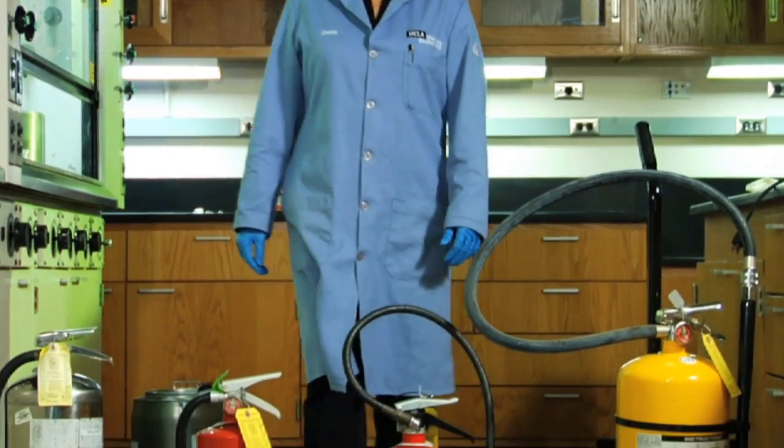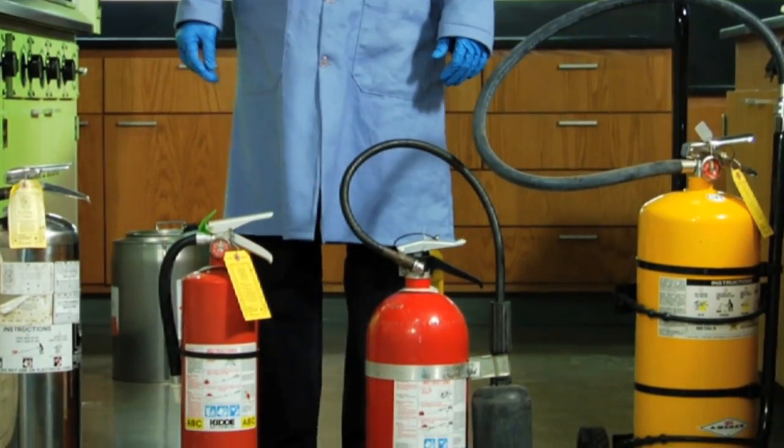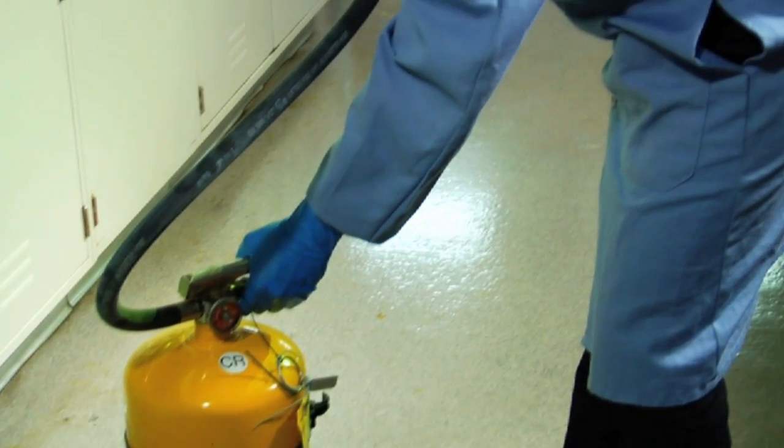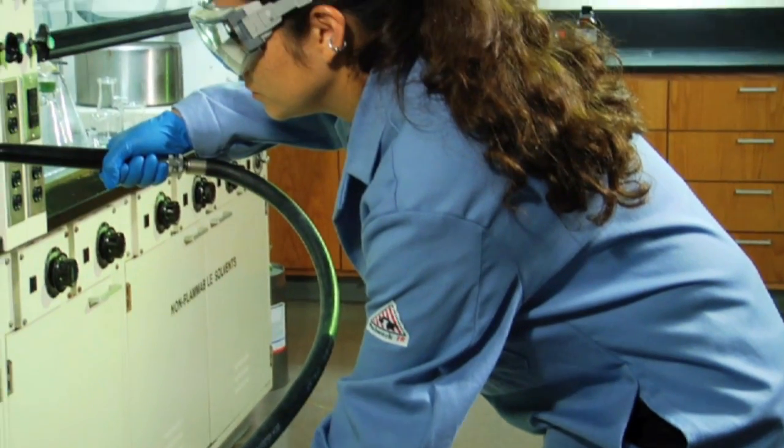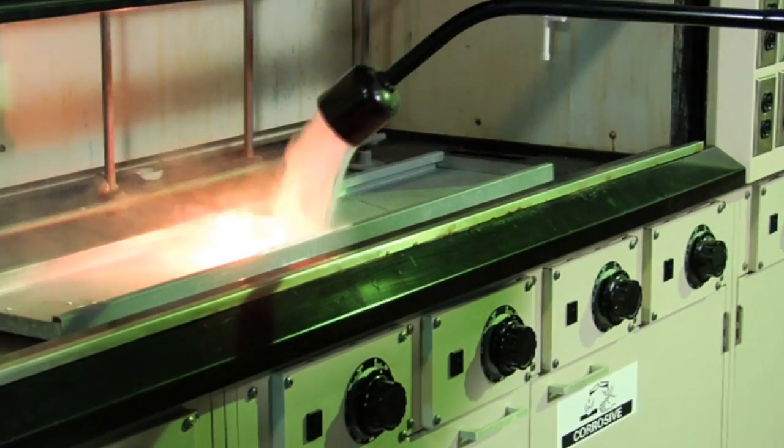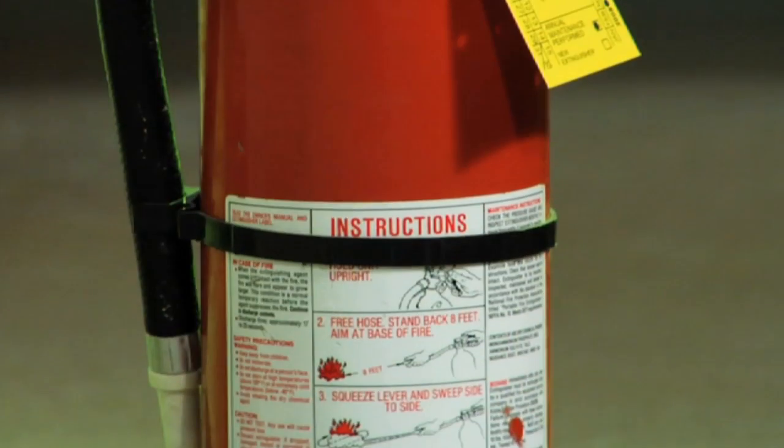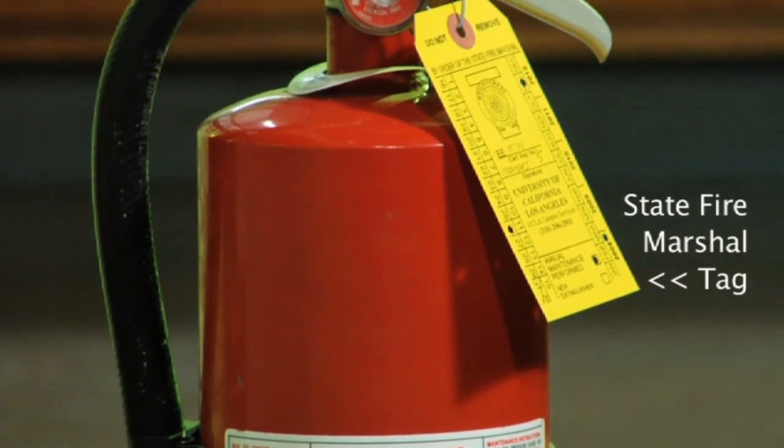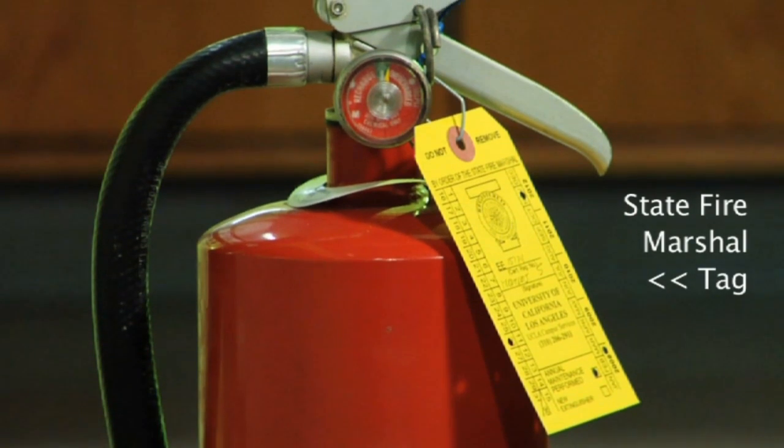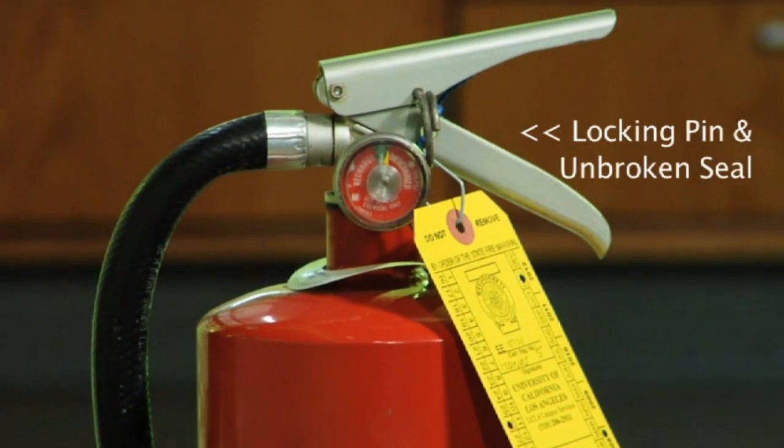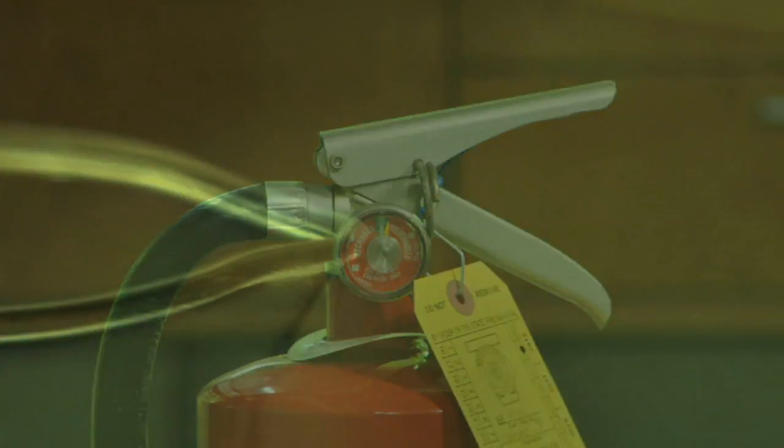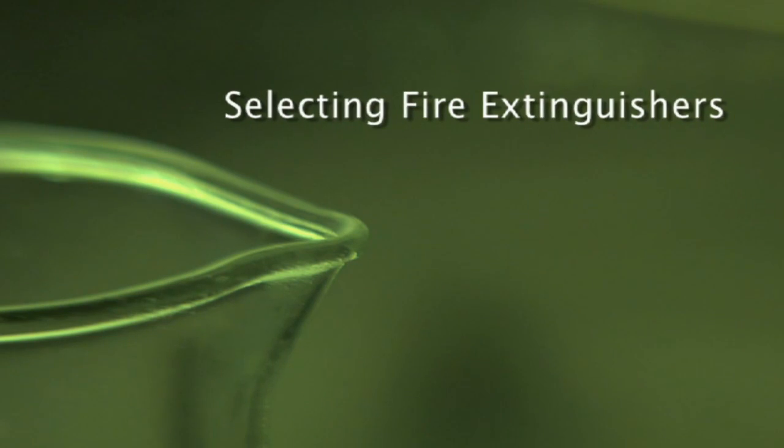Personnel working in lab areas should know how to use and properly identify a fire extinguisher appropriate to the materials being handled. With proper training, you should be able to extinguish a small fire if you feel comfortable doing so. Keep your fire extinguisher accessible and clear of obstructions at all times. A properly maintained fire extinguisher will have an attached State Fire Marshal's tag showing certification date within one year, a locking pin in place and an unbroken seal, and a pressure gauge reading in the green zone.